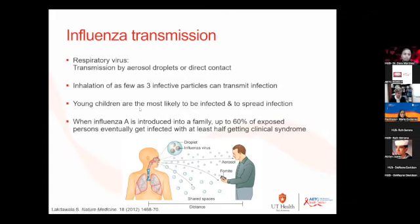This is also different from COVID. When influenza A is introduced into a family, up to 60% of exposed persons eventually get infected and half get the clinical syndrome — it really spreads a lot in families.